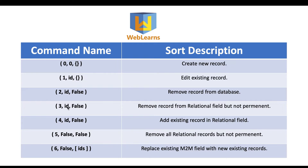Command three (3, ID) also deletes a record but not permanently — it unlinks the record from the current record set but the record remains in the database table. That's the main difference: command two permanently removes from the database, while command three just unlinks it. Command four (4, ID) adds an existing record ID to a specific one-to-many field. Command five (5, False) removes all records from a one-to-many field — it unlinks them from the current record set but does not permanently delete them from the database.